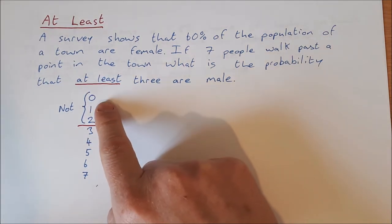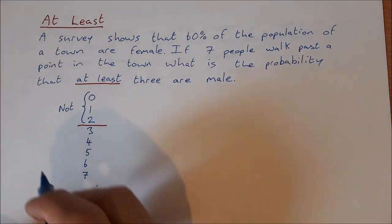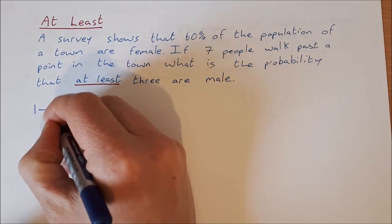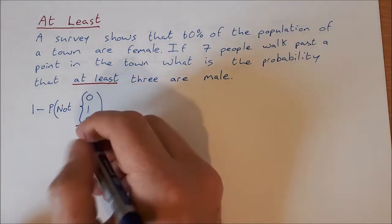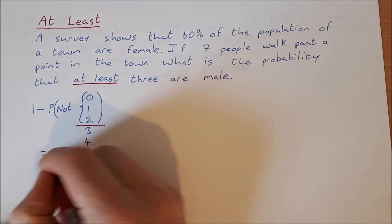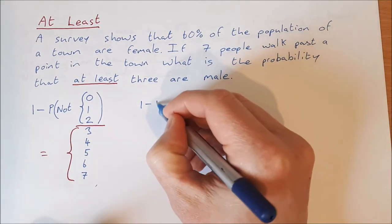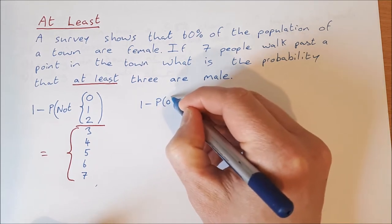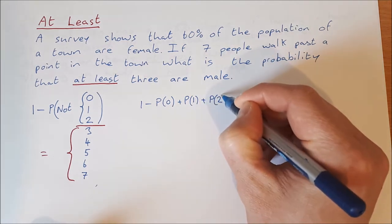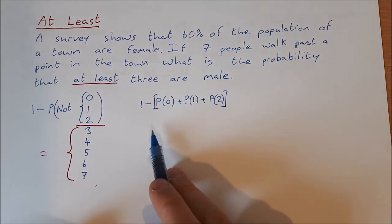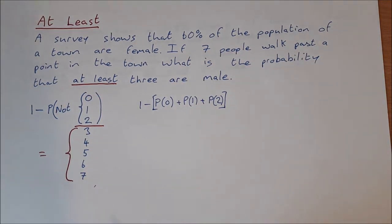We can calculate the probability of having no males, one male, or two males, and then do one minus that probability. One minus the probability of zero, one, or two males gives us the probability that at least three of them are male. So it's: one minus [P(0 males) + P(1 male) + P(2 males)].